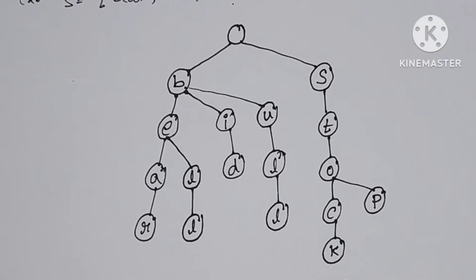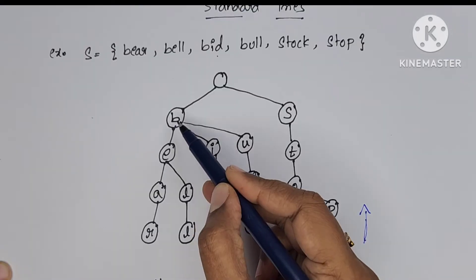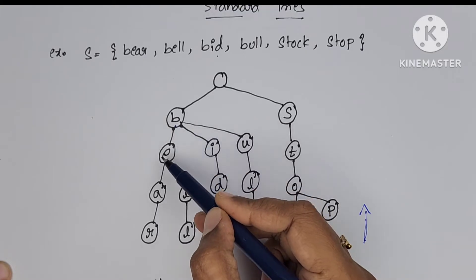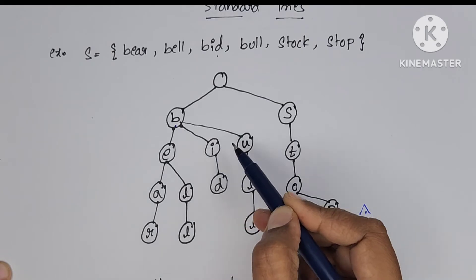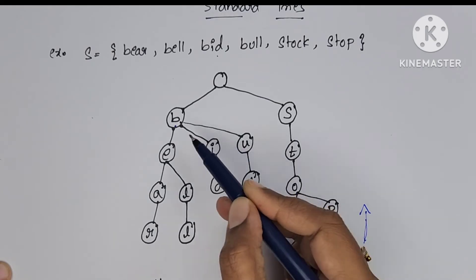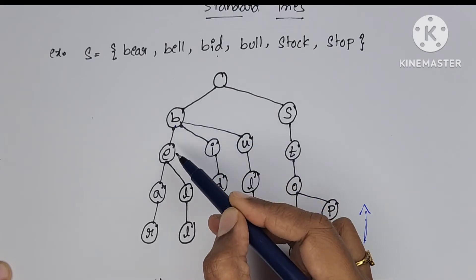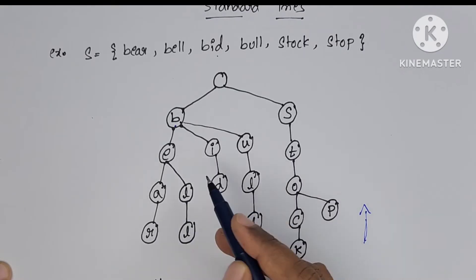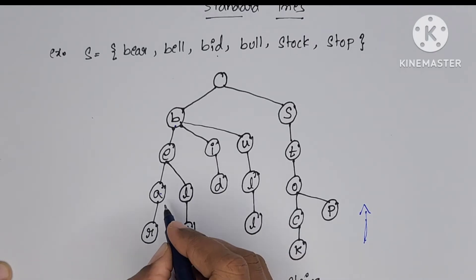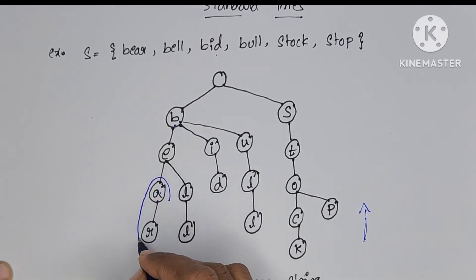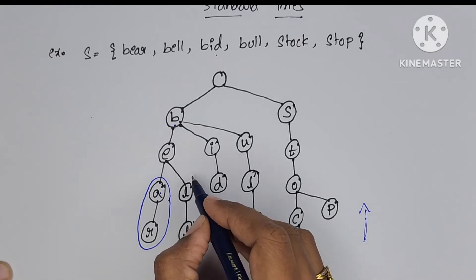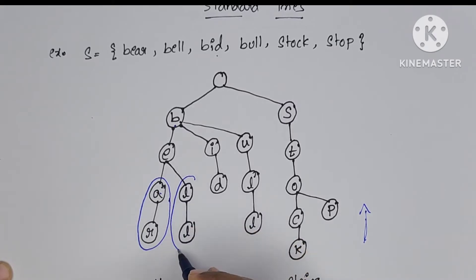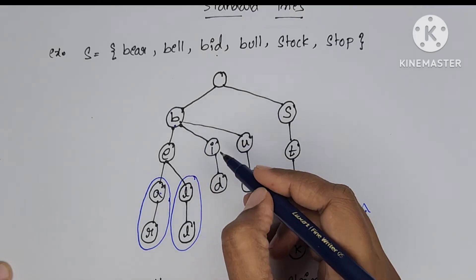We will see how to reduce the number of levels in a standard trie. From any node to a leaf node, if there is only one path, then we can combine those nodes. For example, from B you can reach leaf nodes via different paths: B-E, B-I, B-U, so you cannot combine B with another node. From E to A there is one path, and from E to L also one path, so you cannot combine E.